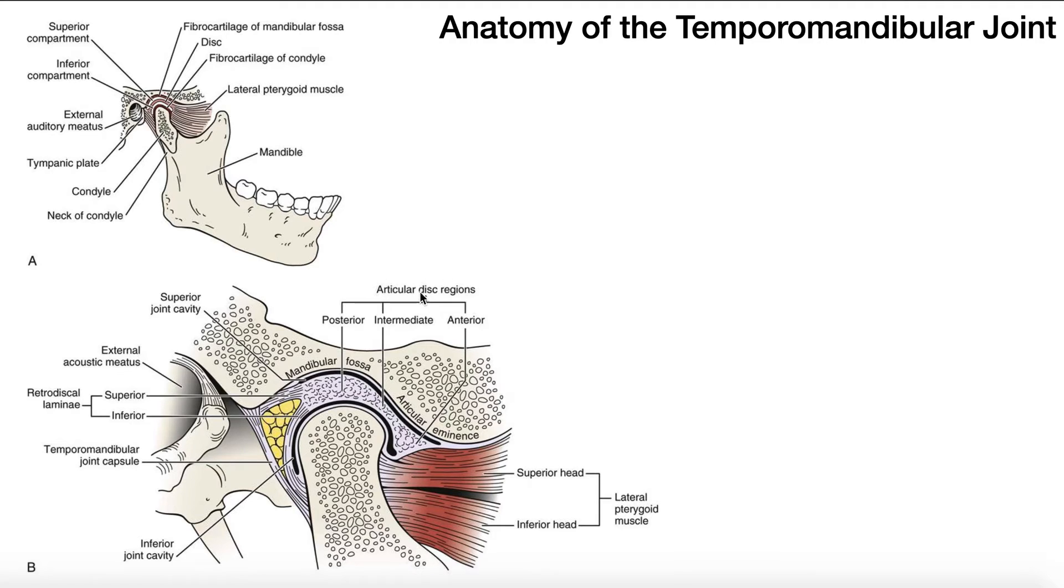The last thing to talk about here are the regions of the articular disc. So there's an anterior region. This part is the component where the superior head of the lateral pterygoid inserts. There's a posterior region, which is really the part here that at rest is the most superior. And also posteriorly, it gives off these retrodiscal laminae. And then in between them is the intermediate region.